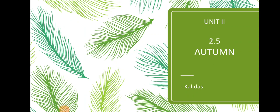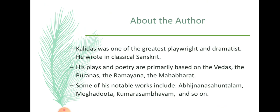Good morning students. Let us love and respect nature. Hope you all have completed the activities of the fall of Troy. Let us begin with 2.5 Autumn Poem written by Kalidas. About the author: Kalidas was one of the greatest playwrights and dramatists. He wrote in classical Sanskrit. His plays and poetry are primarily based on the Vedas, the Puranas, the Ramayana, and the Mahabharata. Some of his notable works include Abhijana Shakuntalam, Meghaduta, Kumarasambhavam, and so on.